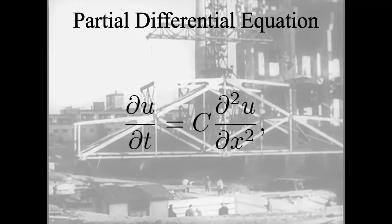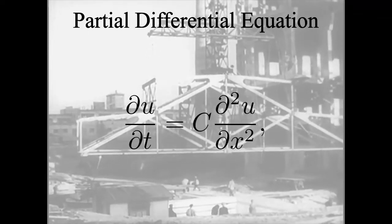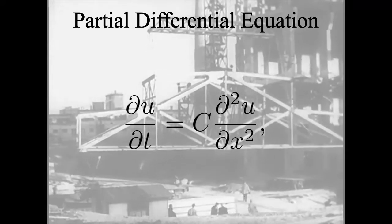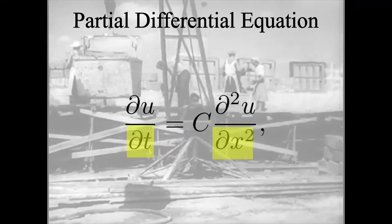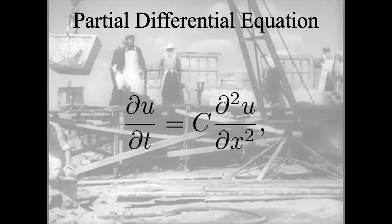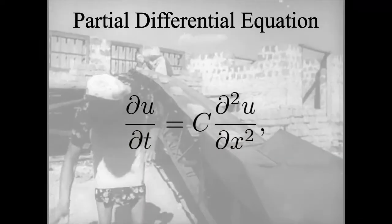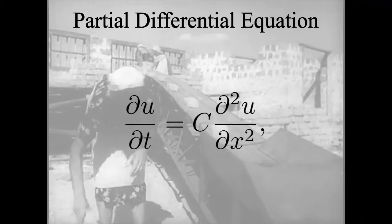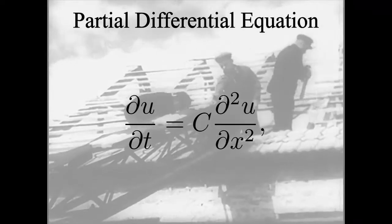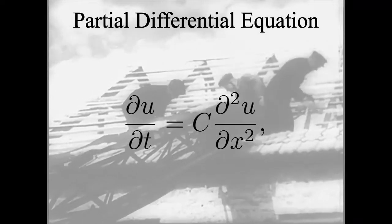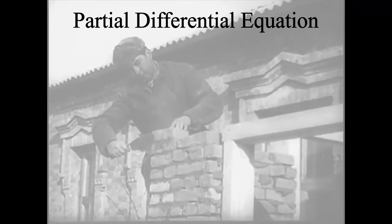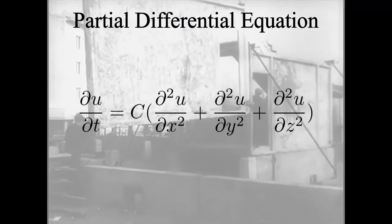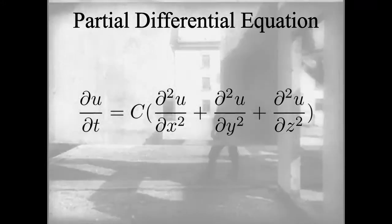Partial differential equations, on the other hand, are much more difficult to solve as they deal with multiple changing variables, usually time along with dimensions in space. This is the one-dimensional heat equation. It describes how temperature changes over time and space in one dimension. The C here is a constant which represents the properties of the medium. Getting back to Lukianov, he would have been interested in solving three-dimensional heat equations. Unfortunately, he lacked fast and precise methods to solve them.